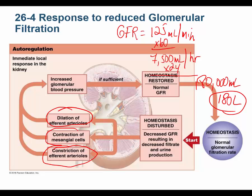In addition, mesangial cells contract. These cells are part of the juxtaglomerular apparatus, containing gap junctions and serving as a communication port between the juxtaglomerular cells of the afferent arteriole and the macula densa cells of the distal convoluted tubule. Their contraction not only increases glomerular pressure but also contributes to the renin-angiotensin-aldosterone system.